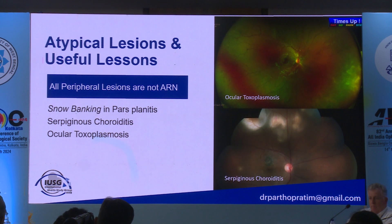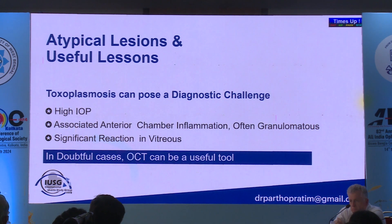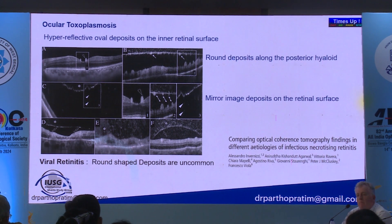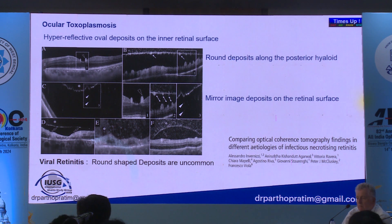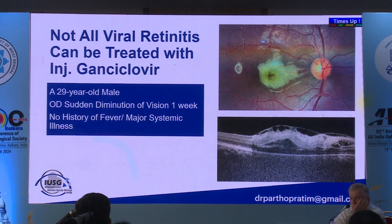Understand that not all peripheral lesions are ARN — it can be snow banking, serpiginous choroiditis, or ocular toxoplasmosis. Toxoplasmosis is a major differential diagnosis because, like viruses, it can have raised IOP, anterior chamber inflammation, and significant vitritis. OCT is a valuable marker: as shown in a paper by Agarwal and Aniruddha, hyperreflective oval deposits on the inner retinal surface can be seen on OCT in suspicious cases.